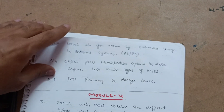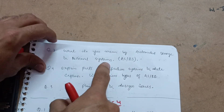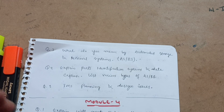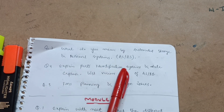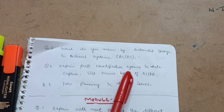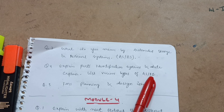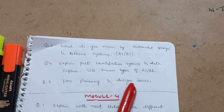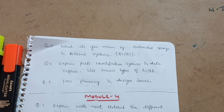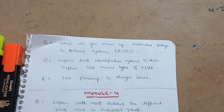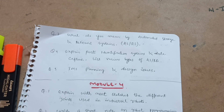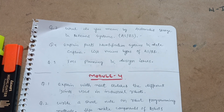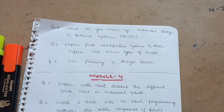The next important 10-mark question is: what do you mean by Automated Storage and Retrieval Systems (AS/RS)? Also, explain parts identification systems and data capture, and list various types of AS/RS. Next, explain FMS planning and design issues. There is also another chapter on line balancing — numerical problems are asked in the examination, so if you are comfortable with the numerical part you can go through it. I have focused here on how you can pass the CAD/CAM subject with theoretical concepts.